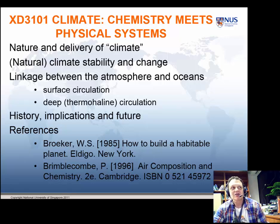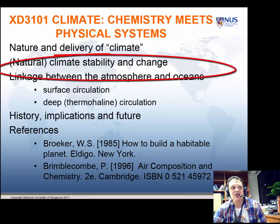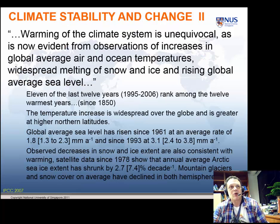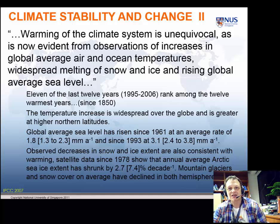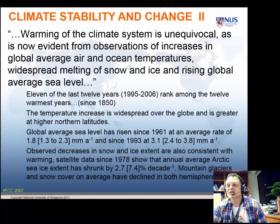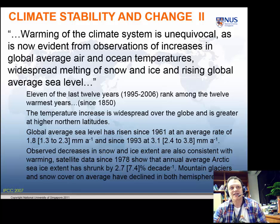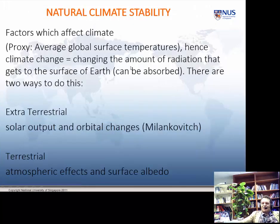Welcome back to Module XD3103, The Planet Earth. This is part two of the lecture on Chemistry meets Physical Systems, really examining ideas of climate. We're going to continue now, away from the detail of ice ages for a moment, and look at the more global pattern — the framework of why some of these things may occur. I thought it was a reasonable idea to look at the most recent statement of the IPCC on climate change, and that's the context for where we go from here. So let's think about natural climate stability or instability, and factors that affect climate.